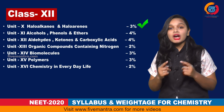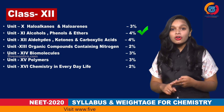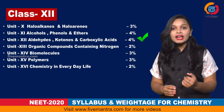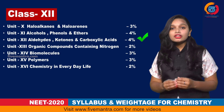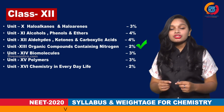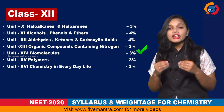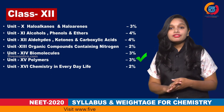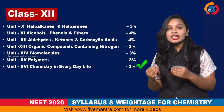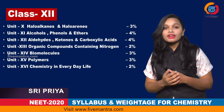Unit 9, Coordination Compounds, has 9% weightage. Unit 10, Haloalkanes and Haloarenes, has 3% weightage. Unit 11, Alcohols, Phenols, and Ethers, has 4% weightage. Unit 12, Aldehydes, Ketones, and Carboxylic Acids, has 4% weightage. Unit 13, Organic Compounds Containing Nitrogen, has 2% weightage. Unit 14, Biomolecules, has 3% weightage. Unit 15, Polymers, has 3% weightage. Unit 16, Chemistry in Everyday Life, has 2% weightage. This class also totals 100% weightage across all chapters.